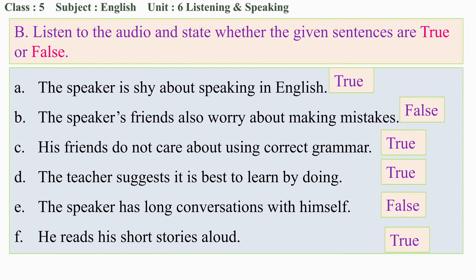I'm a bit shy when I have to speak in English. I'm a little worried about making mistakes. Many of my friends don't worry about mistakes - they just talk and talk. They always get their message across, even if their grammar is wrong. I think this is the best thing to do. My teacher always says it's best to learn by doing. If I don't try to speak English, I'll never be able to use it when I need it. One thing I started doing recently was talking to myself. I have short conversations with myself. I think it works. I also make short stories about people and say them aloud. I do this in my room, of course. People would think I'm crazy if I did it in class or on the train.